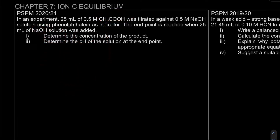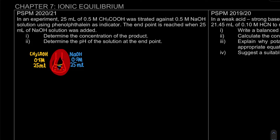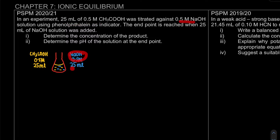Let me show you how it looks. In the conical flask, we will reach the end point where the indicator has changed color. This is the concentration and volume of the acid based on the question, and this is the concentration and volume of NaOH when the end point is reached. So our total volume of solution is now 50 mL.